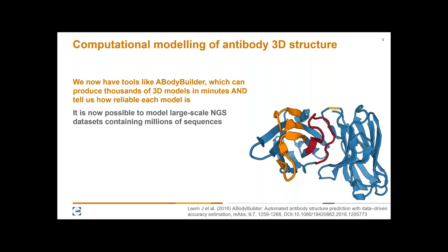We're increasingly moving towards large-scale approaches: alongside an antibody immunization campaign, we create large sequence datasets by high-throughput sequencing of millions of antibodies, and ideally we want to use that information to improve antibody discovery. This field is still somewhat in its infancy; people have tried many sequence-based approaches to identify interesting antibodies, but we'd really like to superimpose structural information on top. With AbodyBuilder, this should be possible in theory given its speed and ability to flag model accuracy.